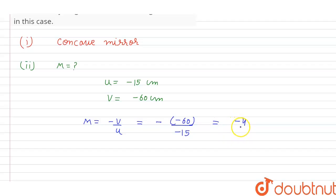Hence, the linear magnification of the image is minus 4. And this negative sign in magnification shows that the image formed is real and inverted.